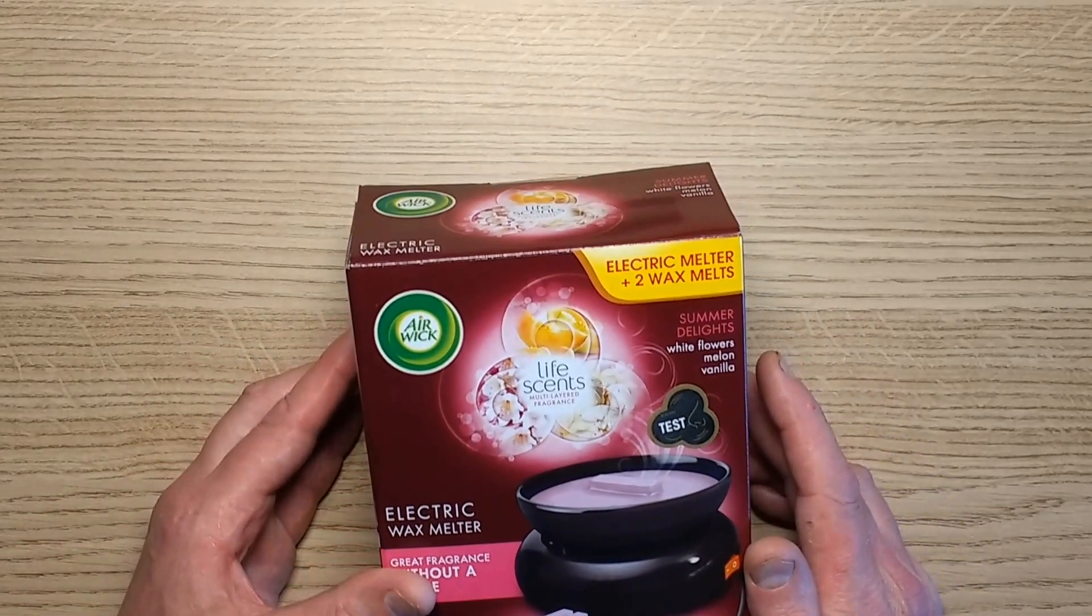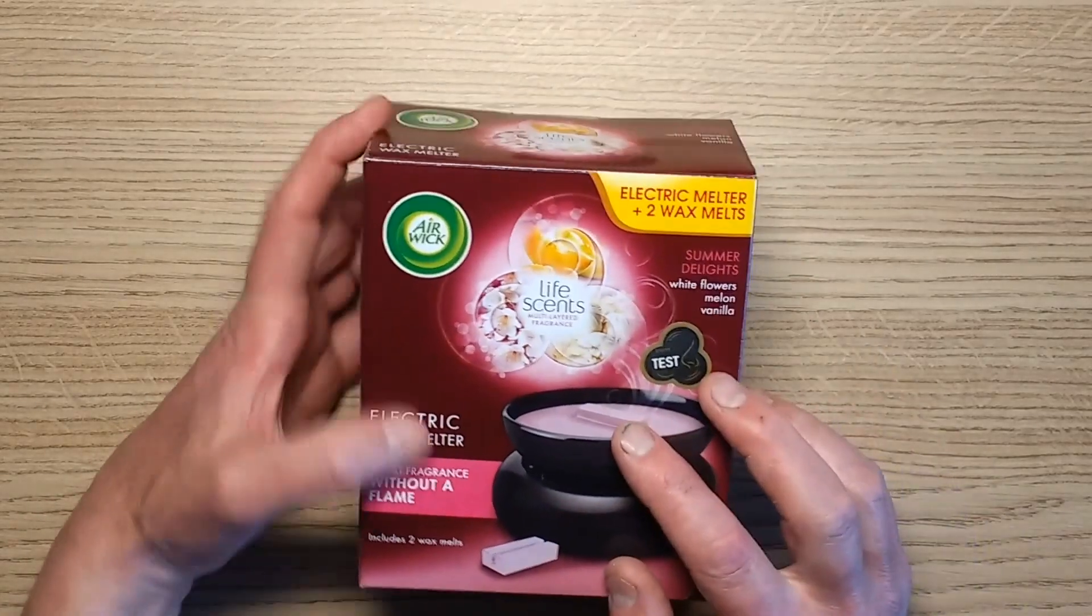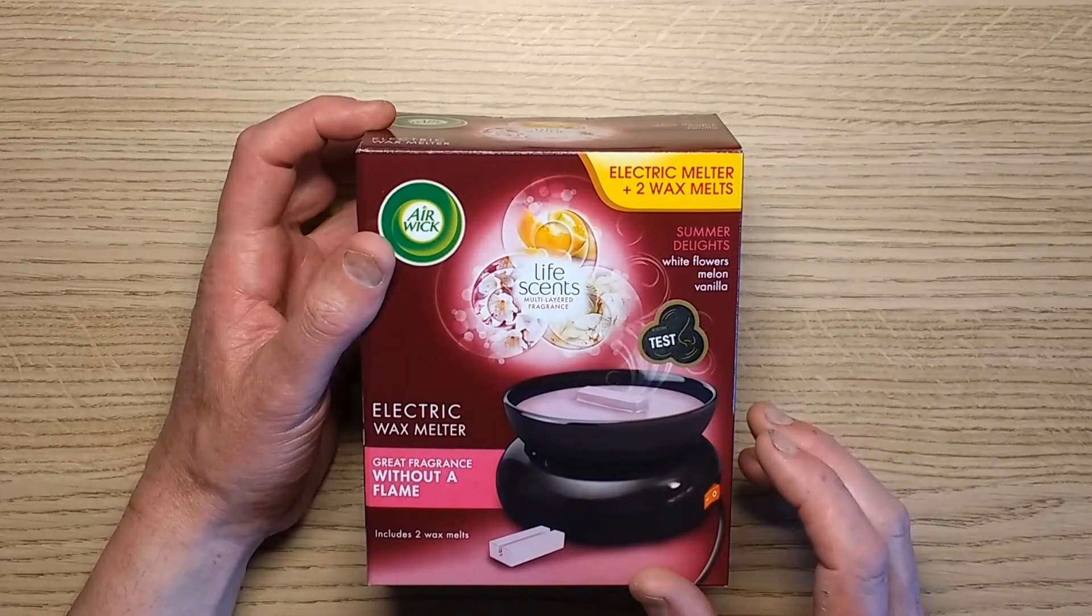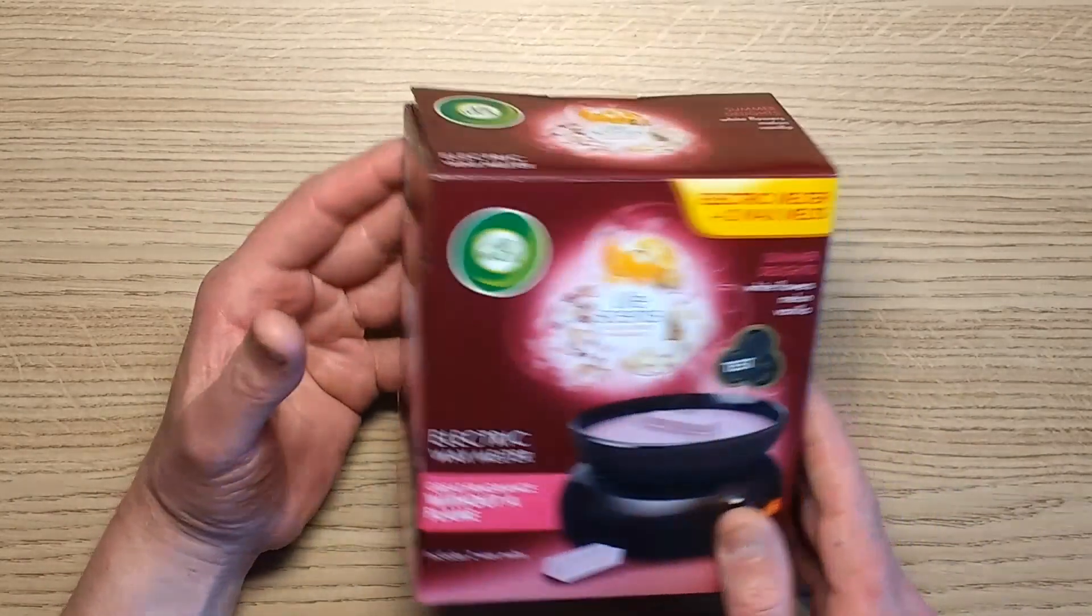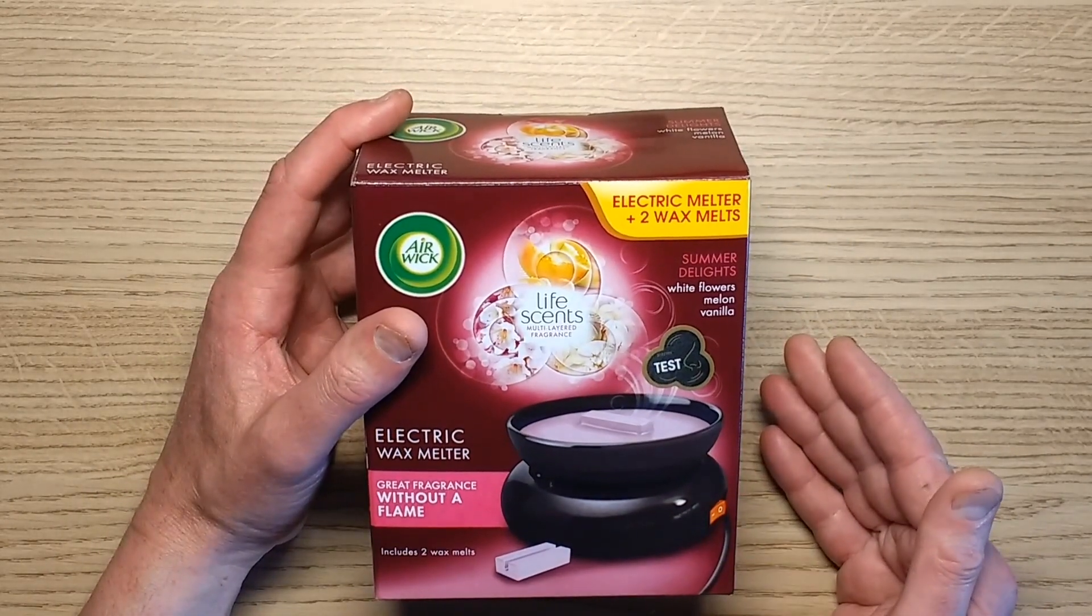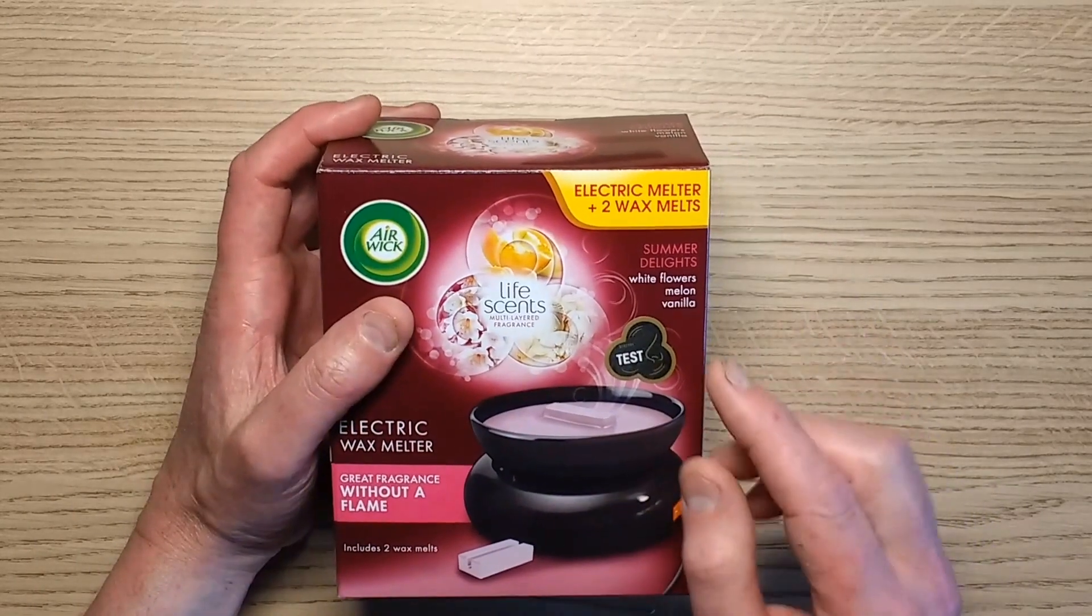I've taken electric wax melters apart in the past and I'm pretty sure the last one just had a fixed value resistor in it. So this is a different one, this is an Airwick. I think it's a different one. Have I taken one of these apart before? I don't think I have.